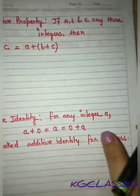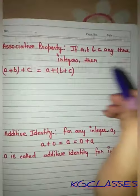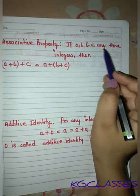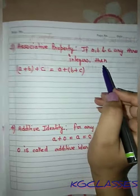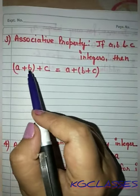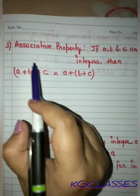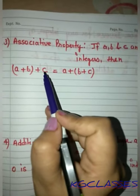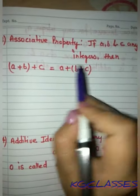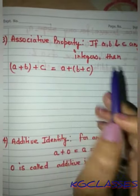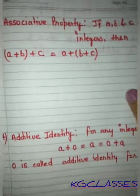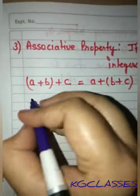The next property is the associative property. If a, b, and c are any three integers, then we have a plus b plus c. If we add a and b first, then add c, or add b and c first, then add a, the answer will be equal. Let's do it.